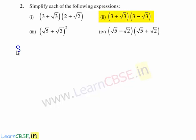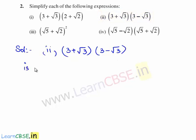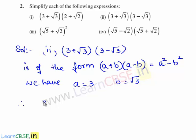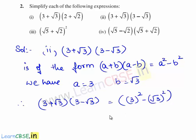Now let us move on to the second bit of the question. The expression given is (3 plus root 3) times (3 minus root 3). This expression is of the form (a plus b) times (a minus b), which is equal to a squared minus b squared. On comparing, we have a equal to 3 and b equal to root 3. Therefore (3 plus root 3) times (3 minus root 3) equals 3 squared minus (root 3) squared, which is 9 minus 3, equal to 6.